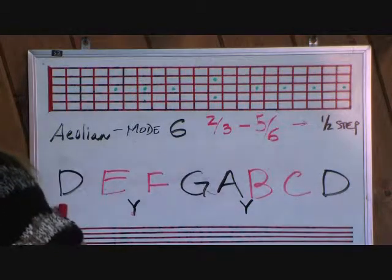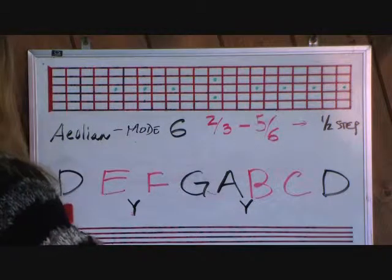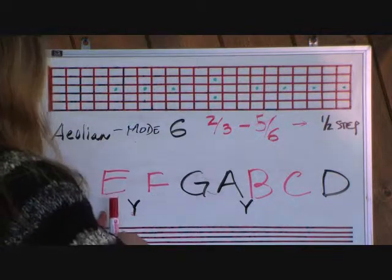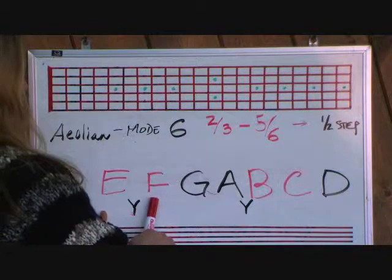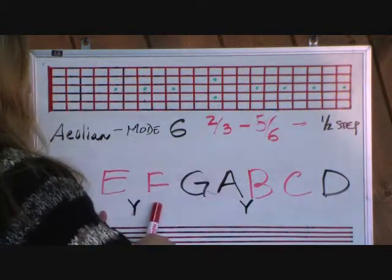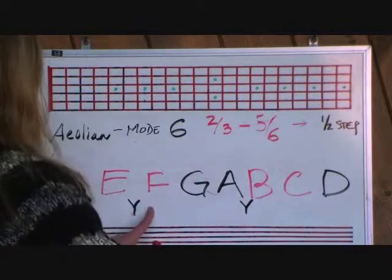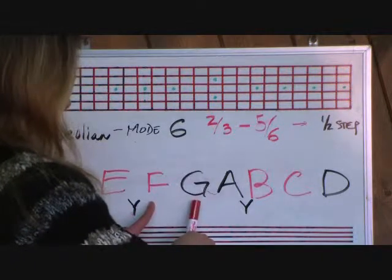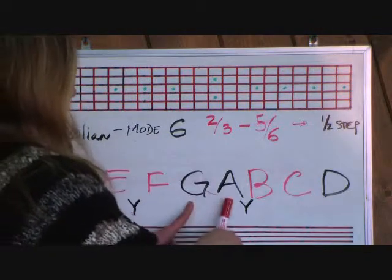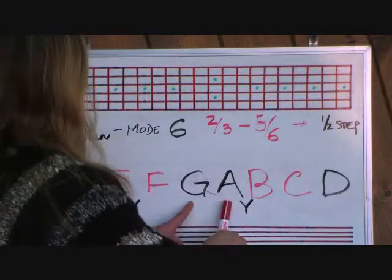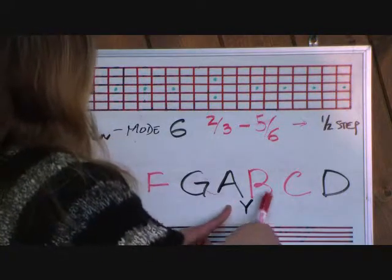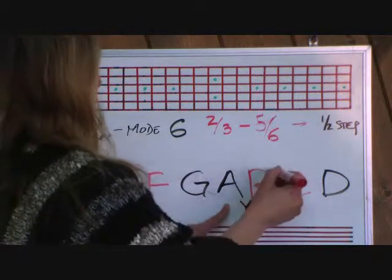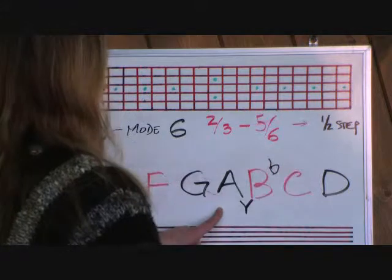The first step of the D Aeolian scale is D. We need to make a whole step between D and E — it is a whole step, so we leave that alone. Second step E, third step F — the formula says it needs to be a half step, and it's already a half step, so you don't need to do anything. Third step F, fourth step G, needs to be a whole step — F to G is a whole step, leave that alone. Fourth step, G to A, is a whole step — leave that alone as well. A to B — formula says half step between 5 and 6 — A to B is a full step, so you need to flat the B.